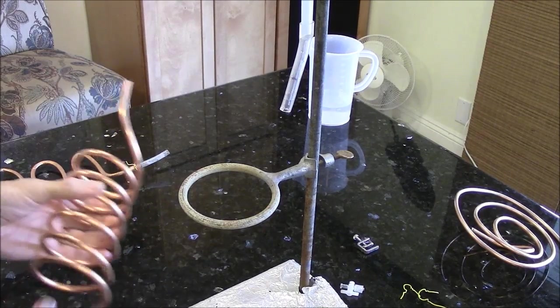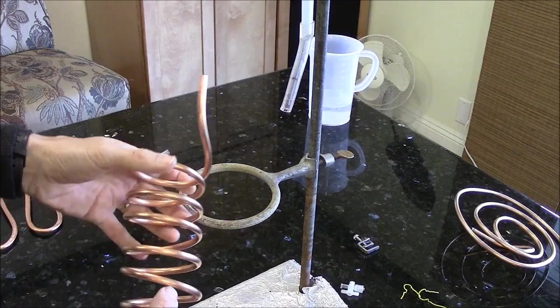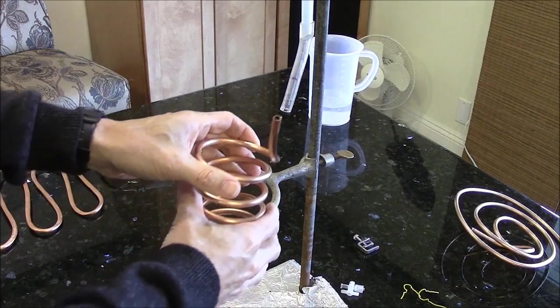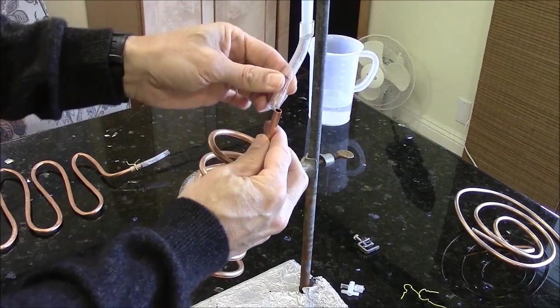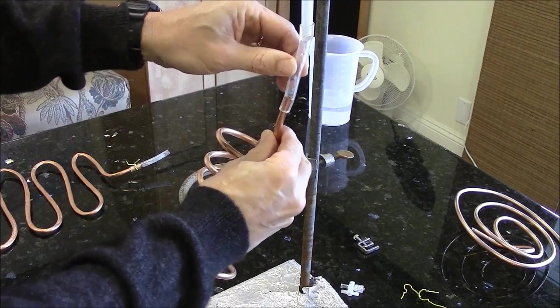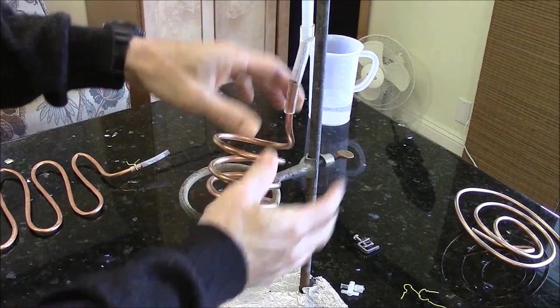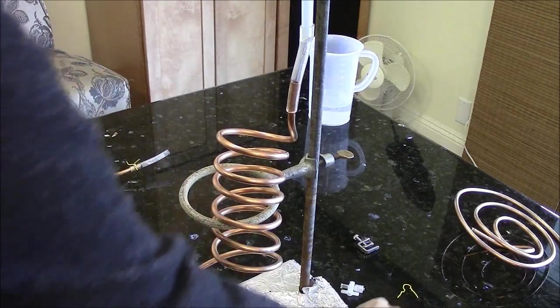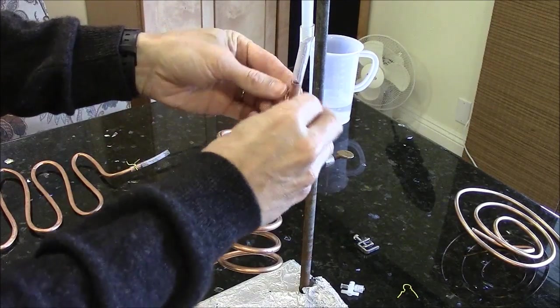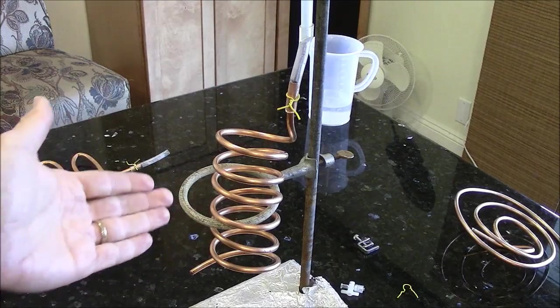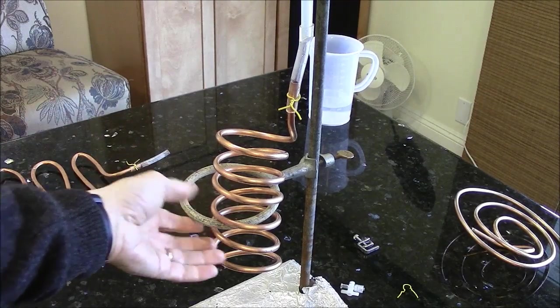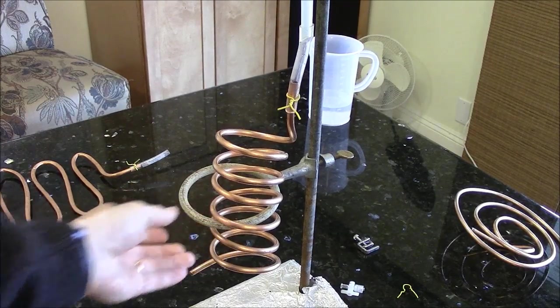Here I'll choose this module and connect it to the flexible tube at the bottom of the funnel. Once again, that's a pretty good fit but it requires a twist tie to make it secure. You can see I've got my ring clamp here providing some support for this coil.